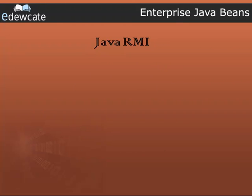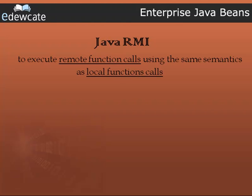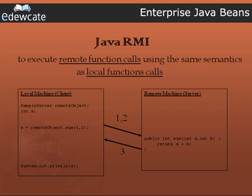RMI expands to Remote Method Invocation. In the scenario of distributed systems, when we need to invoke methods on a remotely located JVM, we use the RMI technology, but the effect is just the same as if it were a function call local to our machine. Here is a typical example where we are sending two parameters, say 1 and 2, to a remote machine which calculates their sum and sends us the result 3. Though we might actually think that we are invoking calls on our own machine, this is the actual scene unknown to us.